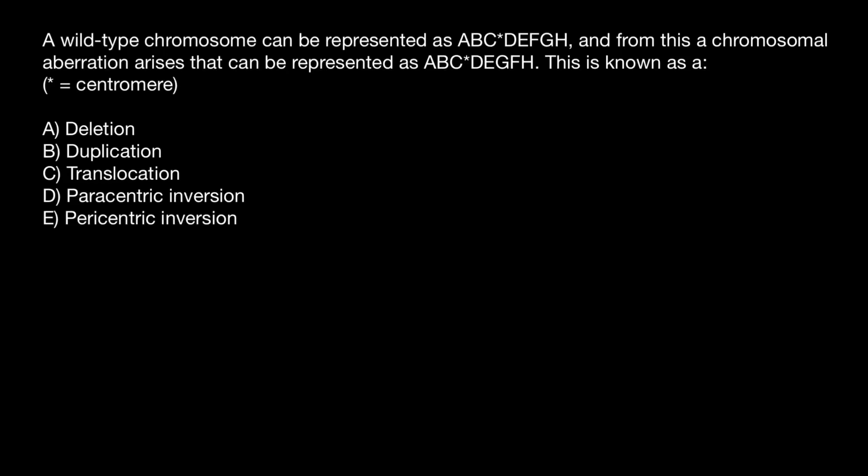Hello, and welcome to Nikolai's genetics lessons. Today's problem is: a wild-type chromosome can be represented as ABC*DEFGH, and from this a chromosomal aberration arises that can be represented as ABC*DEGFH. This is known as, and you have to choose one of these answers.